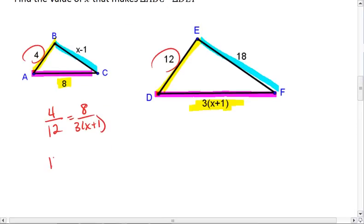Cross-multiply, I get 12X plus 1, which equals 96. Divide both sides by 12. I get X plus 1 equals 8. X equals 7.